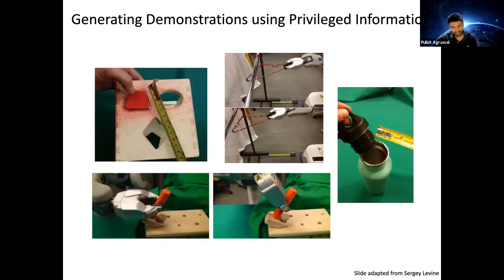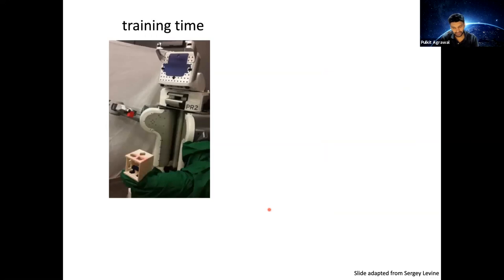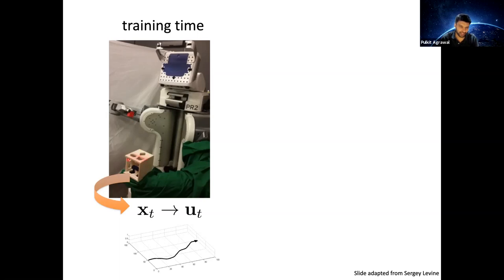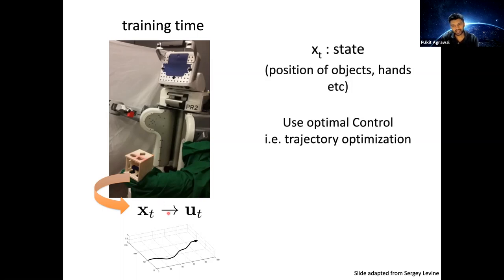We can treat the output of this planner or policy optimization method as the expert, then train a policy based on sensory observations available at evaluation time. Another example is guided policy search — performing manipulation tasks like fitting shapes into holes, hanging hangers, bottle-cup tasks. At training time, we assume we know the exact location of the cube and shape, giving us access to low-dimensional state information.